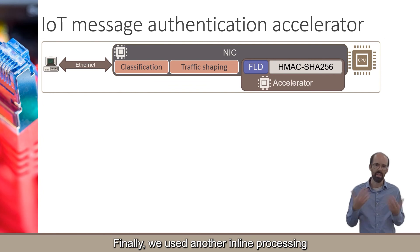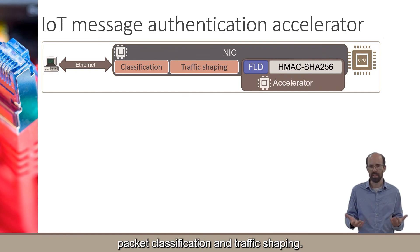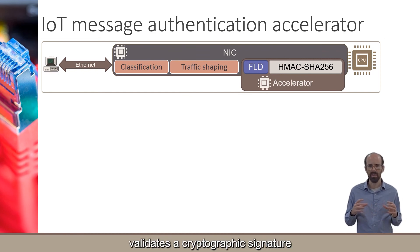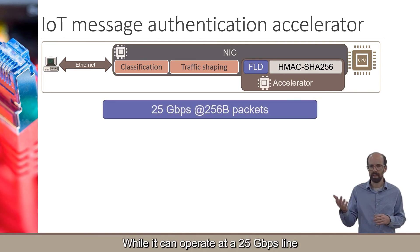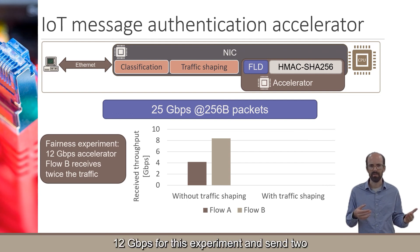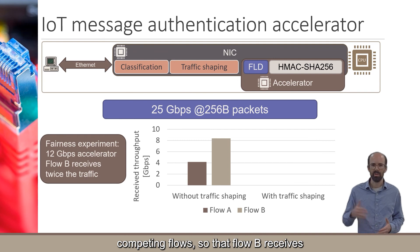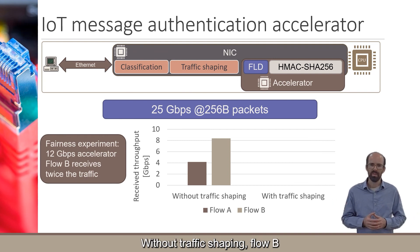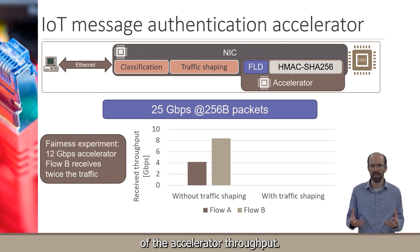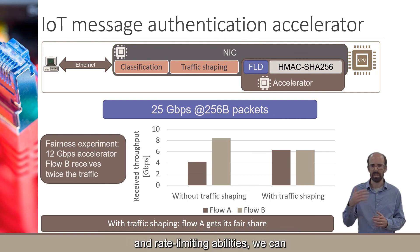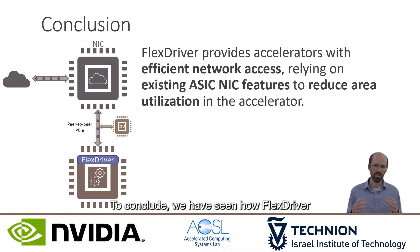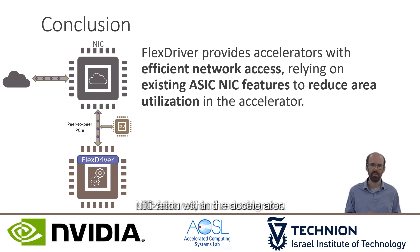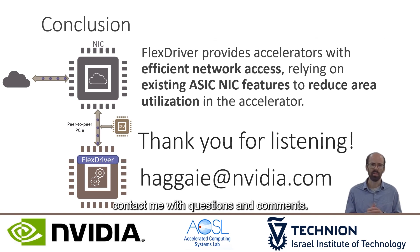Finally, we used an inline processing application to demonstrate packet classification and traffic shaping. This IoT authentication accelerator validates a cryptographic signature on incoming messages and drops invalid ones to protect the host. While it can operate at 25 Gbps line rate, we intentionally limited to 12 Gbps and sent two competing flows so that flow B receives twice as much traffic as flow A. Without traffic shaping, flow B also utilizes twice as much of the accelerator's throughput. Using the NIC's packet classification and rate-limiting abilities, we can limit flow B so that flow A also gets its fair share. To conclude, FlexDriver provides accelerators with efficient direct network access, reusing existing NIC features and reducing area utilization within the accelerator. Thank you for listening, and feel free to contact me with questions and comments.